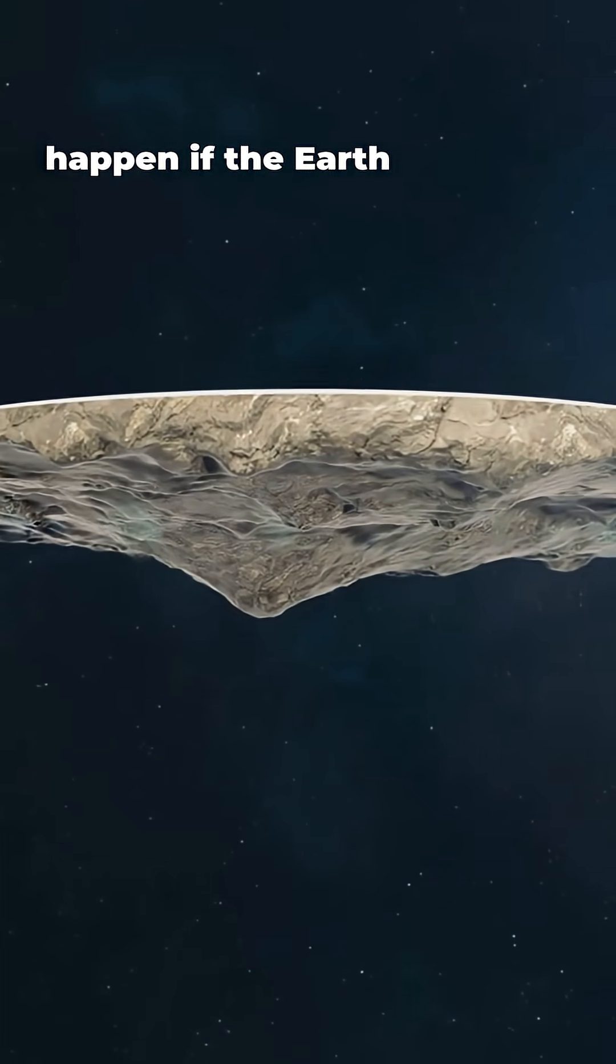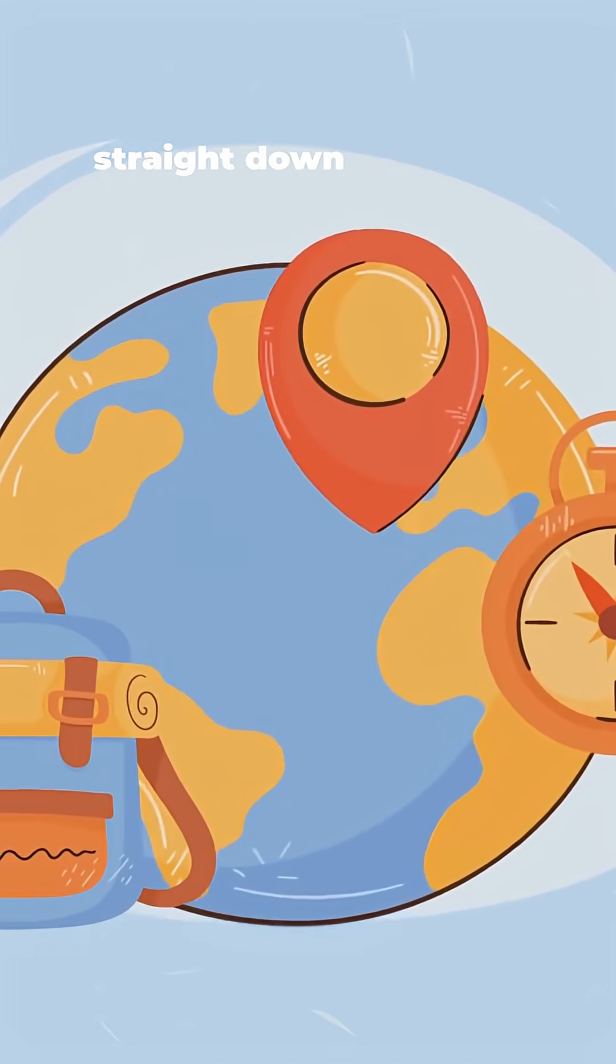Here's what would actually happen if the Earth were flat. First, gravity wouldn't pull you straight down anymore.